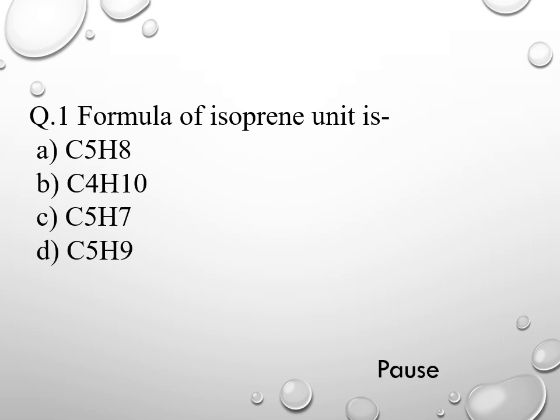Question 1. The formula of the isoprene unit is: option A C5H8, option B C4H10, option C C5H7, and option D C5H9. The right answer is option A, C5H8.